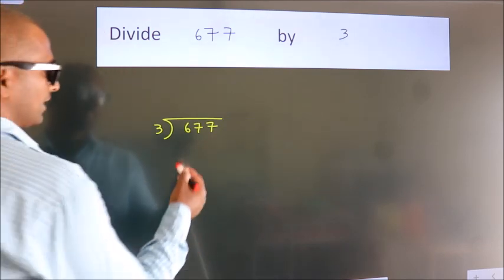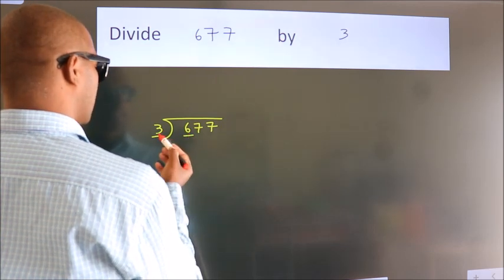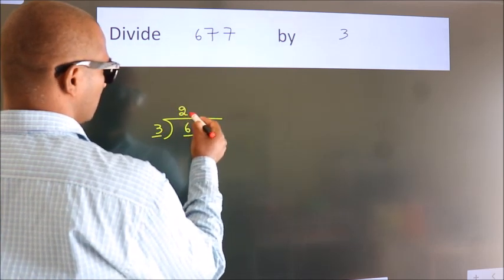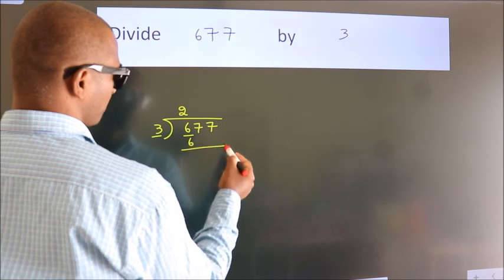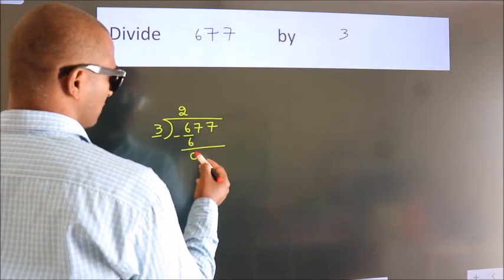here we have 6, here 3. When do we get 6? In 3 table. 3 times 2 is 6. Now, we should subtract. We get 0.